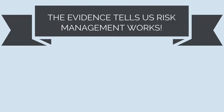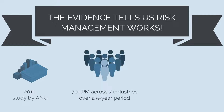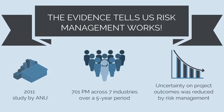If we look at the data, at a higher level, we can be very confident that project risk management results in better project outcomes. In a 2011 study by the Australian National University, 701 project managers were surveyed across seven industries over a five-year period. Analysis was undertaken to determine the impact of uncertainty on project outcomes and the impact of risk management on this process. It was found that while uncertainty negatively impacts project outcomes, even moderate levels of risk management reduce this impact. We can mitigate and manage this uncertainty to achieve better results.